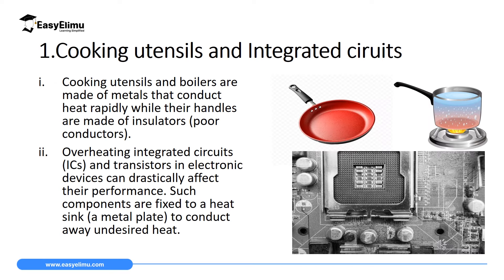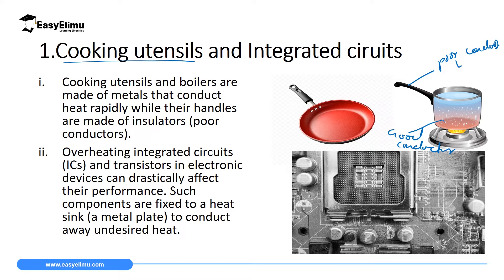One of the applications of good and poor conductors of heat is in the manufacture of cooking utensils. Cooking utensils are designed in such a way that the part which is in contact with the flame is a good conductor of heat, and then the part where you handle is a poor conductor of heat.